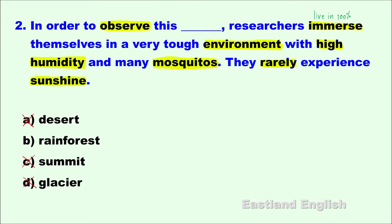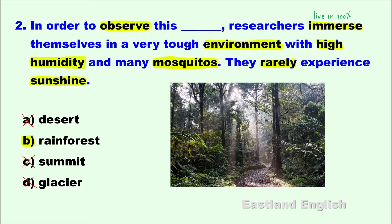B is the best answer. The full sentence for number two: In order to observe this rainforest, researchers immerse themselves in a very tough environment with high humidity and many mosquitoes — they rarely experience sunshine.